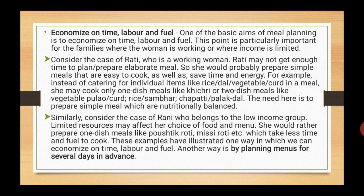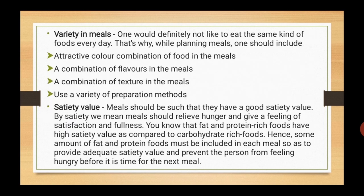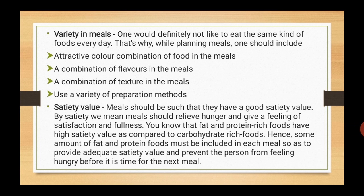Next is variety in meals. No one likes to eat the same kind of foods every day, so serving variety becomes an important aspect in planning meals. While planning meals, include attractive color combinations of food to make it appealing. A combination of flavors will make the meal more enjoyable. A combination of textures — from soft to crispy and crunchy — will make meals more appealing. Use a variety of preparation methods like grilling, steaming, deep frying, boiling or baking. Foods can also be varied by serving them well garnished or by adding butter or cheese.